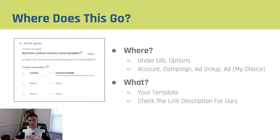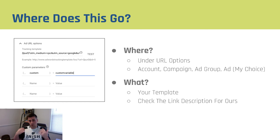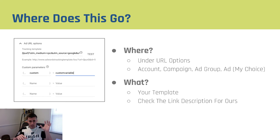So where does this information go? You're going to paste your tracking template when you're building your ads underneath your ad URL options — I'll show you how to do this in the tutorial. You can do this at the account, campaign, ad group, or ad level. I choose to do it at the ad level because I want to make sure it's put in there correctly every single time. If you're great with set-it-and-forget-it, that's awesome — but I'm a tracking guy, so I do it at the ad level every time. All you have to do is add the template in there; check the link in the description for ours.